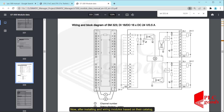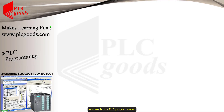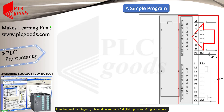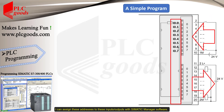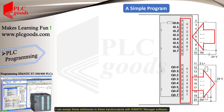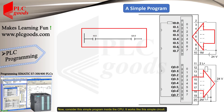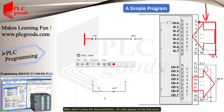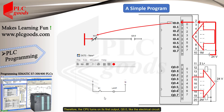Now, after installing and wiring modules based on the catalog, let's see how a PLC program works. This module supports eight digital inputs and eight digital outputs. I can assign these addresses to the inputs and outputs with SIMATIC Manager software. Consider this simple program inside the CPU — it works like a simple circuit. When I press the first push button, 24 volts appear on the first input, and its corresponding contact in the program, I0.0, changes to closed. Therefore, the CPU turns on its first output, Q0.0, just like an electrical circuit.